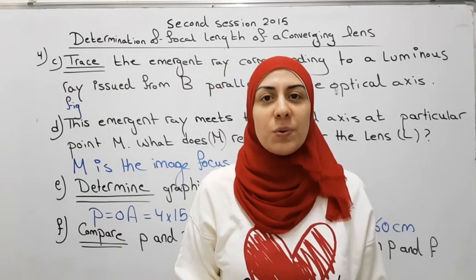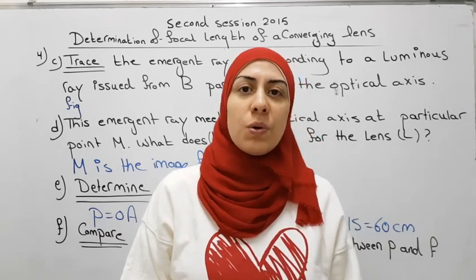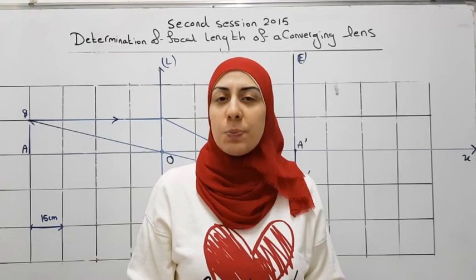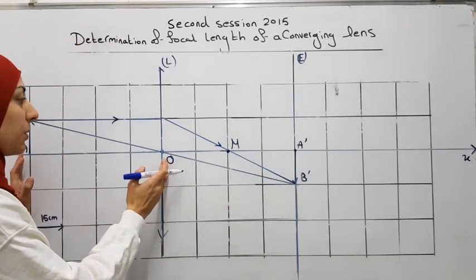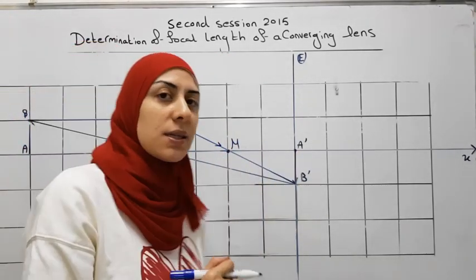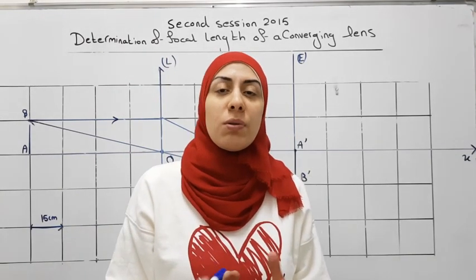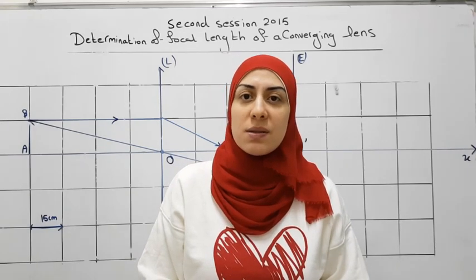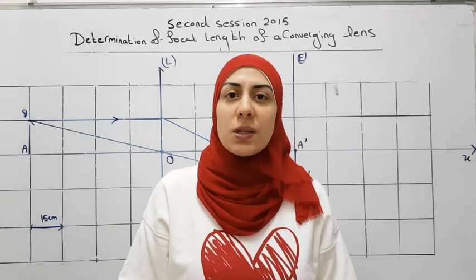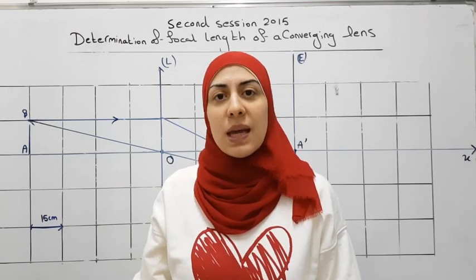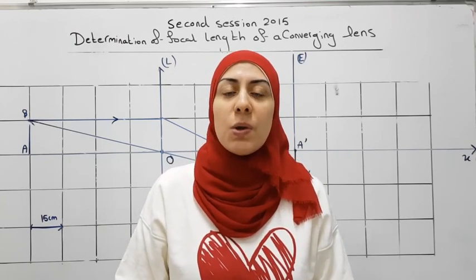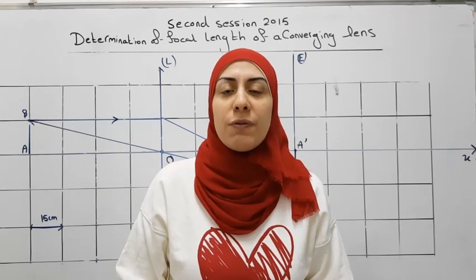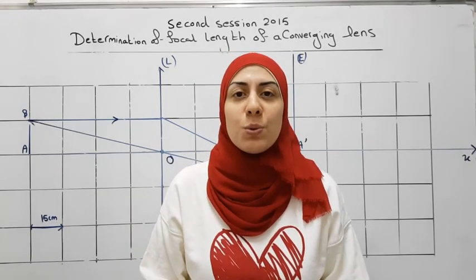Now in this part we want to compare P and P', then deduce the relation between P and F. P is the distance between O and A, and P' is the distance between O and A'. Both are 4 centimeters graphically and both are 60 centimeters in reality. This special case where P equals P' and AB equals A'B' occurs only when the object is placed at distance 2F from the converging lens. So P equals 2F.